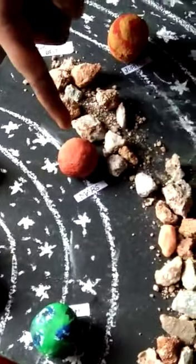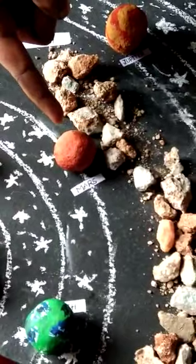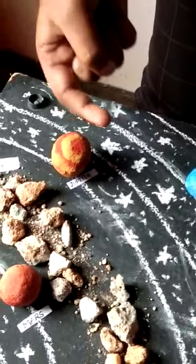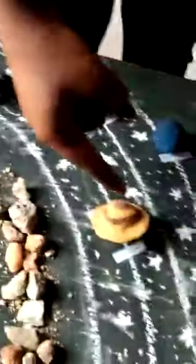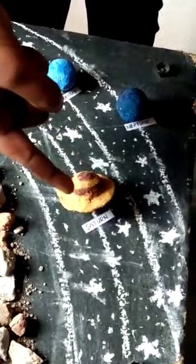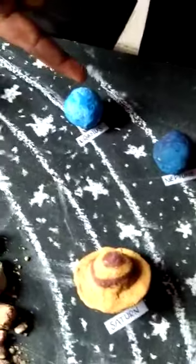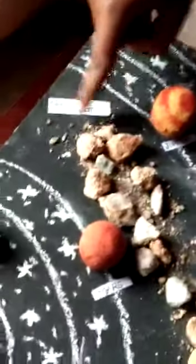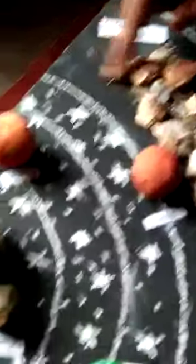Mars is the red planet — it is called red because its surface is totally filled with iron oxide. Jupiter is the largest planet in our solar system. Saturn has a beautiful ring-like structure around it, formed by sand and dust particles. Uranus is the first planet discovered using a telescope. Uranus and Neptune are called twin planets. The asteroid belt is present between the orbits of Mars and Jupiter — you can see the asteroid belts here.